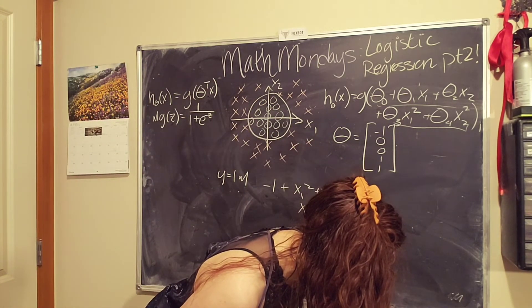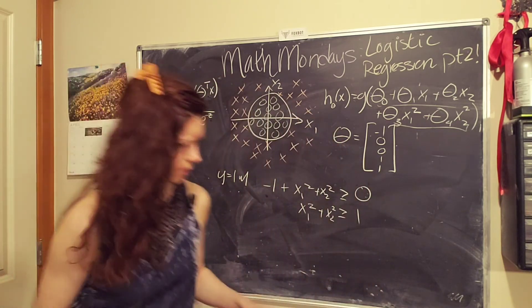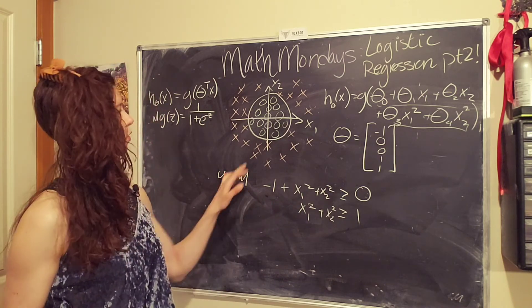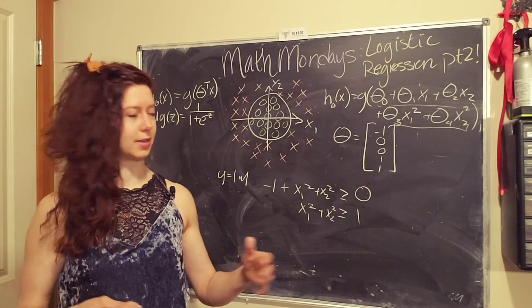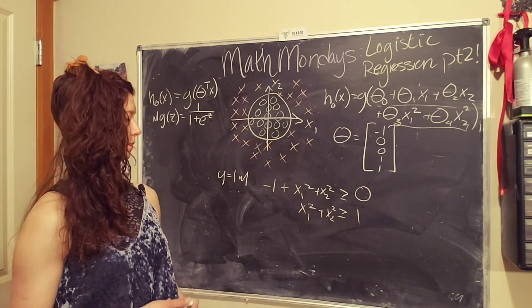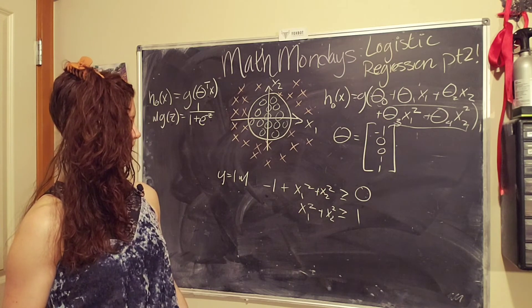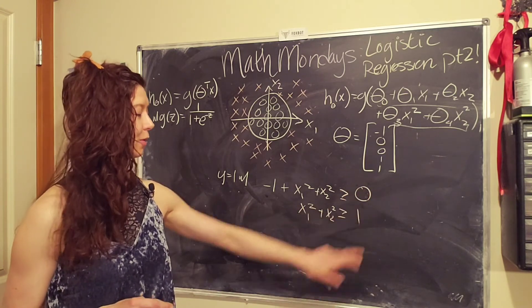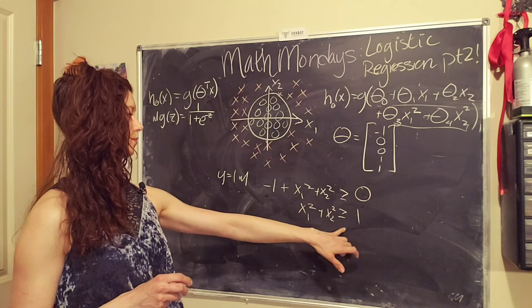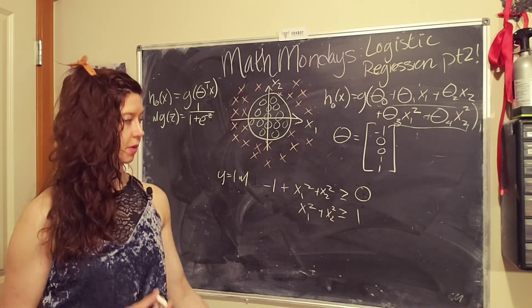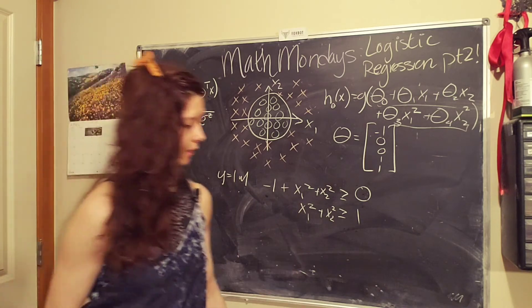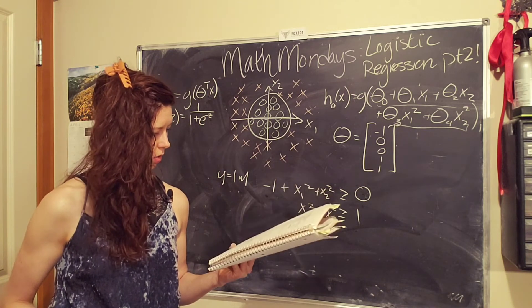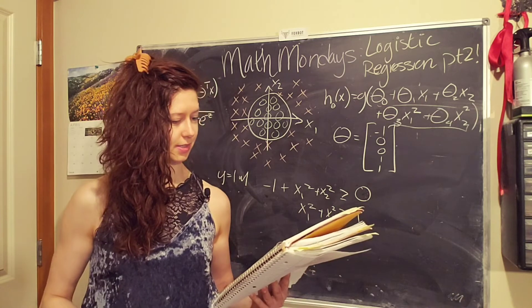And again, we can solve for our actual decision boundary. And so when X one squared plus X two squared is greater than or equal to one, then we have Y equals one. We also could flip this. So if we wanted to say that Y equals one outside of the circle, now I'm getting lost in my train of thought. Anyway, but the point is to keep track of what zero and one means. So in this case, one means not hospitable and zero means hospitable. Here we are. But you could flip it if you wanted to.